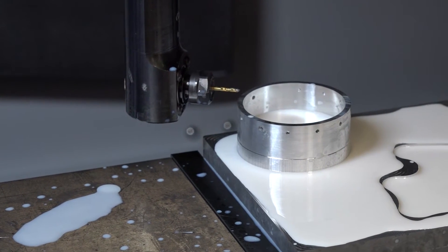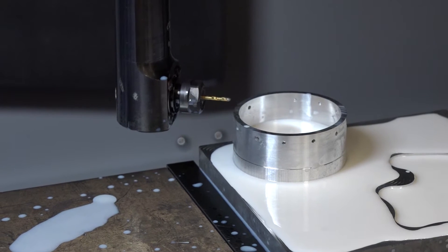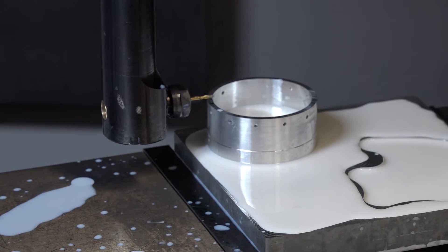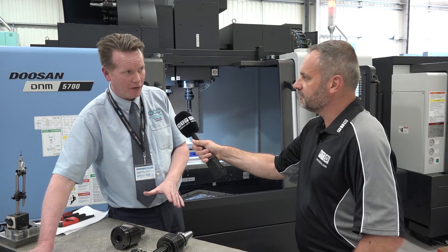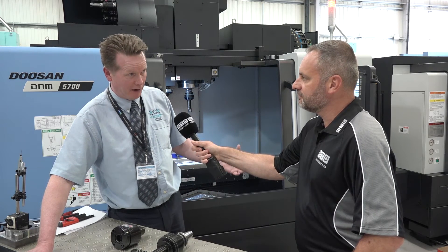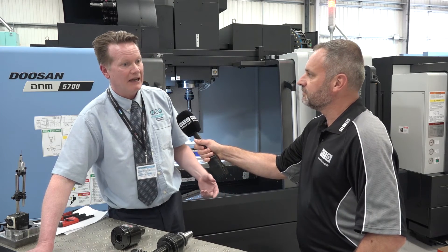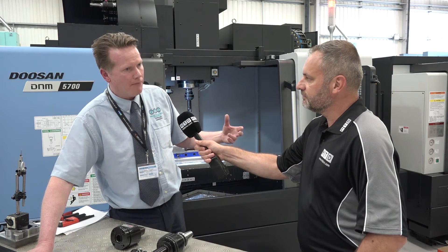So again, with traditional mechanical heads, because they're set in one position, you need a lot of heads to cover all of the holes ultimately that you want to drill. You haven't got that with this. So obviously there's a huge reduction in tooling costs. We're talking about one head here.